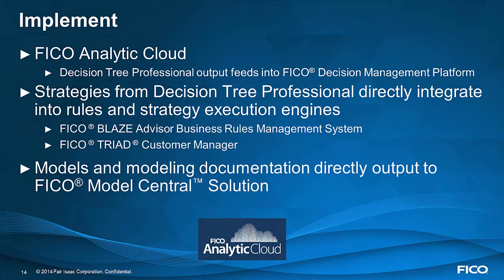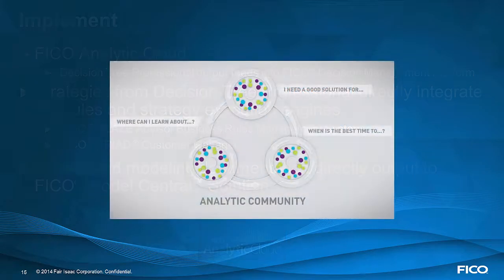When you're ready to implement your set of decision rules, if you're in the FICO Analytic Cloud, you can output them into the FICO Decision Management Platform. If you're using a standalone solution such as Blaze or Triad, you can output code from Decision Tree Professional in a format that can be imported into those solutions. Models and model documentation can be output to the FICO Model Central solution.